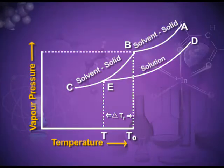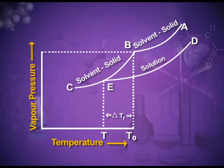Let me explain all this through a graph. The graph is between temperature and vapor pressure — temperature along the x-axis and vapor pressure along the y-axis. You can see three curves: curve AB is for the liquid solvent, curve BC is for the solid solvent, and curve ED is for the solution. Temperature T₀ coincides with point B, which is the freezing point of the pure solvent — the temperature at which for the first time the liquid changes into solid state.